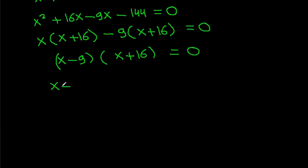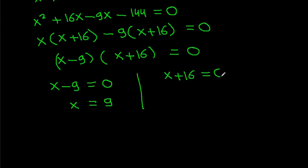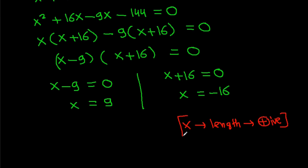So either X − 9 = 0, giving X = 9, or X + 16 = 0, giving X = −16. Since X is a length, it must be positive, so X = 9.